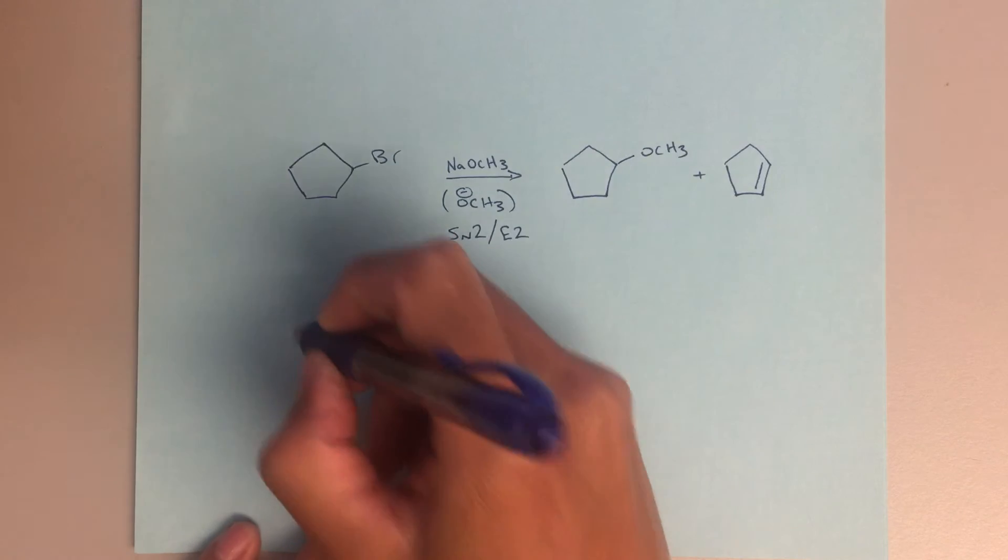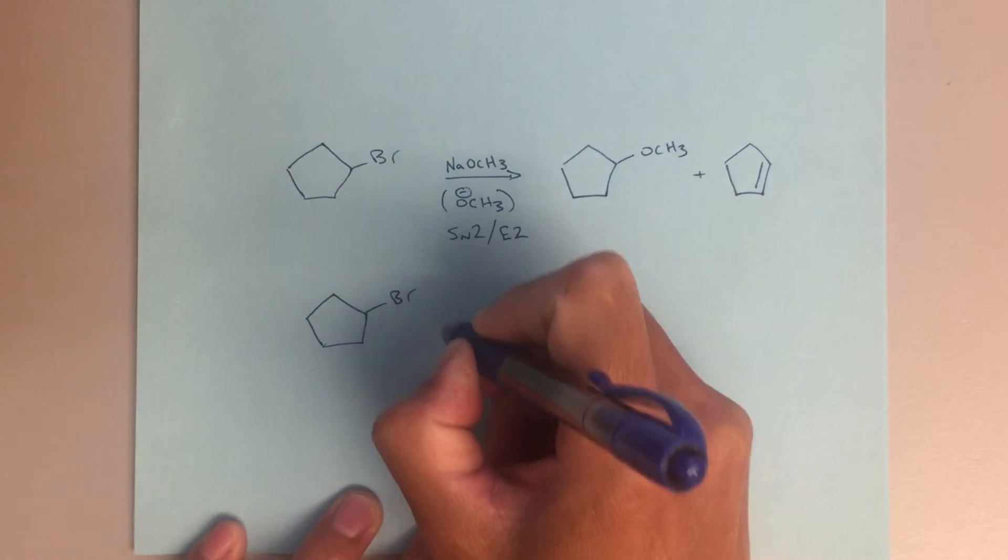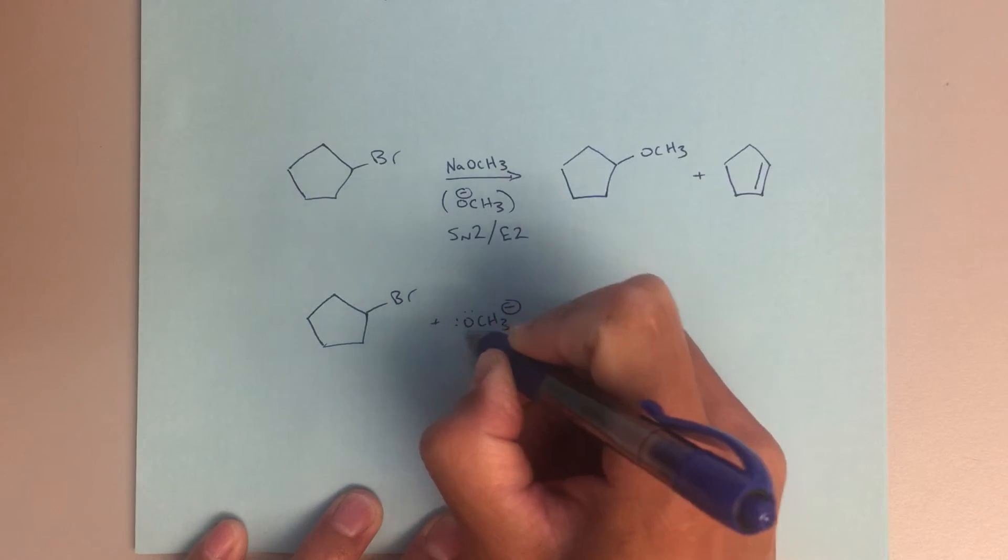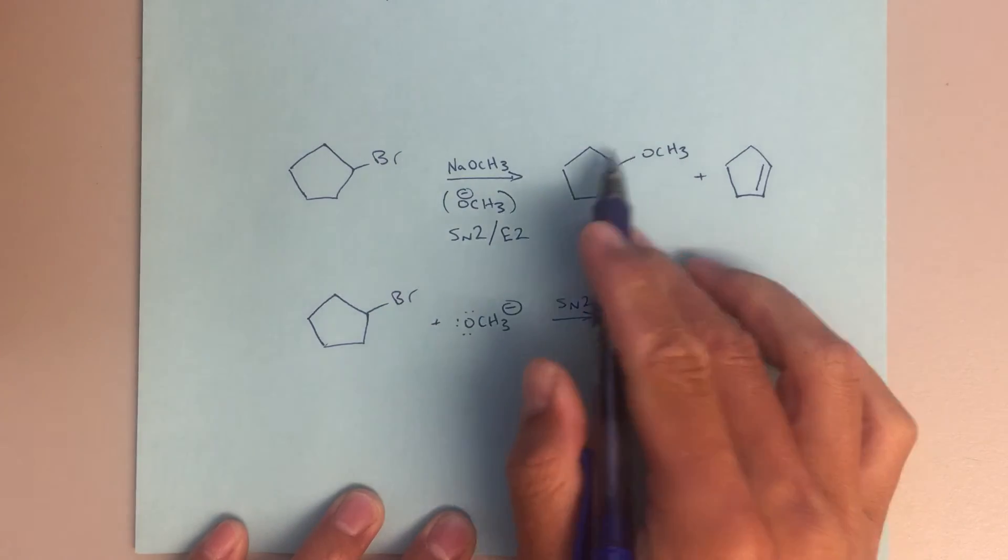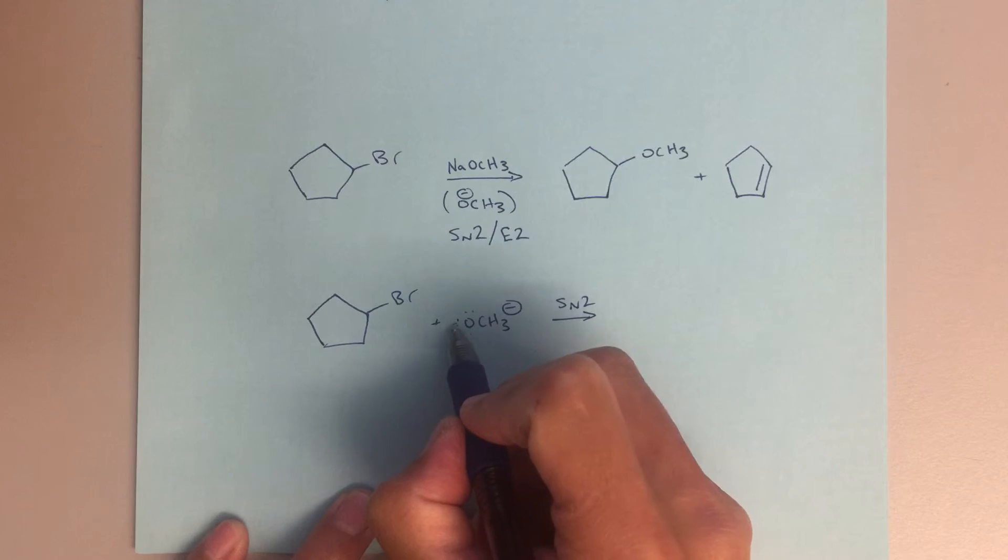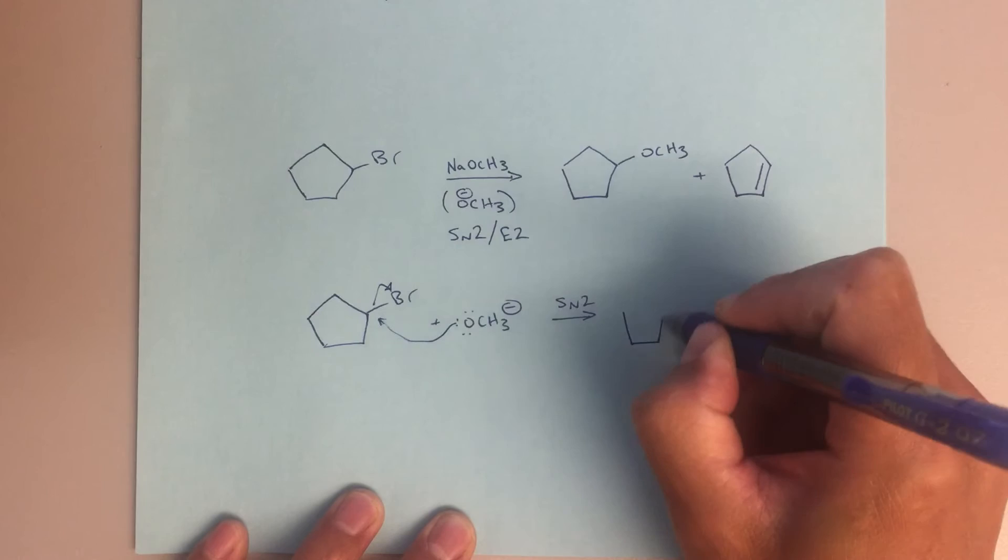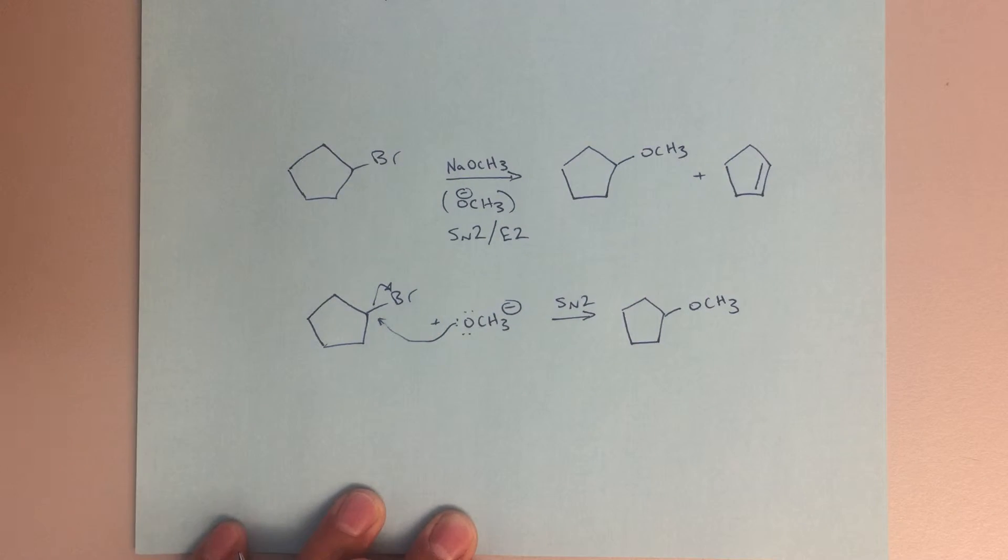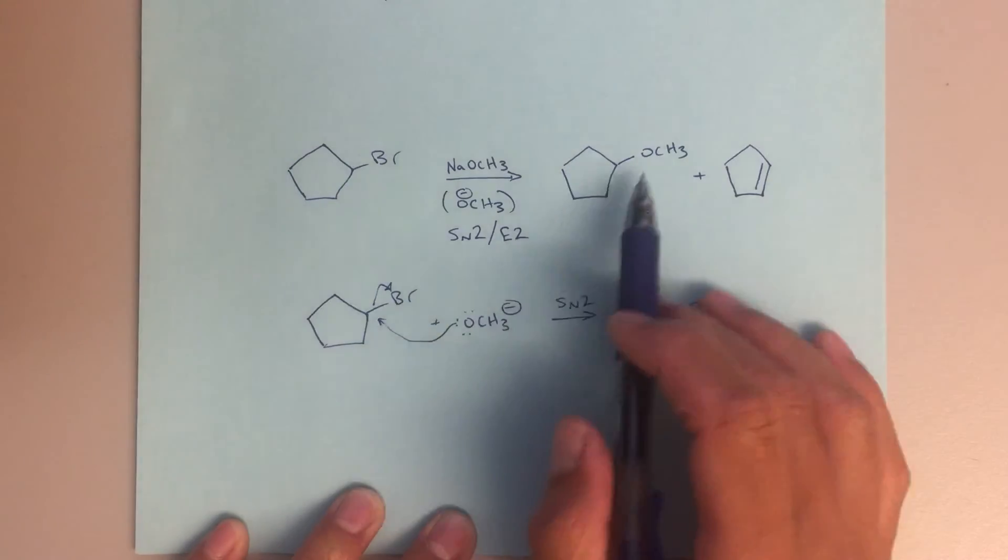So if I wanted to draw out these reaction mechanisms, so I'm going to start with the SN2 reaction mechanism to form this substitution product, and just a simple one step reaction mechanism where this methoxide attacks this carbon, and then the bromine is kicked off as a leaving group. That gives me my first product.